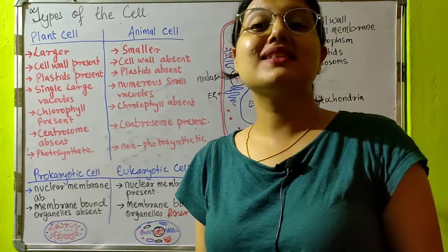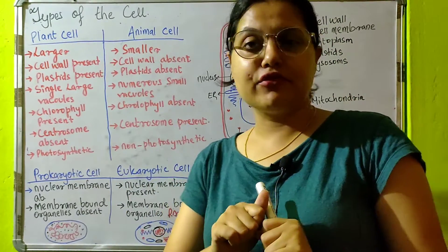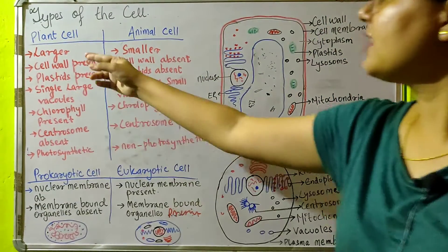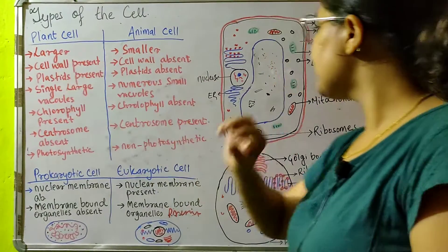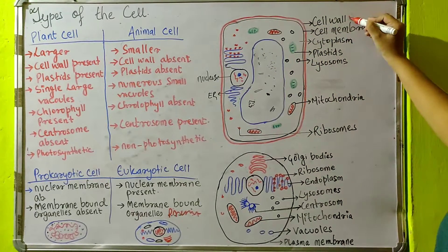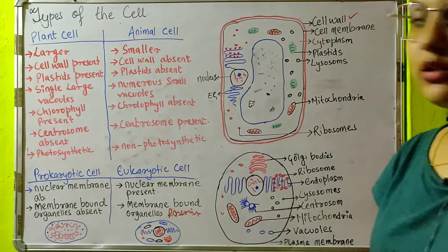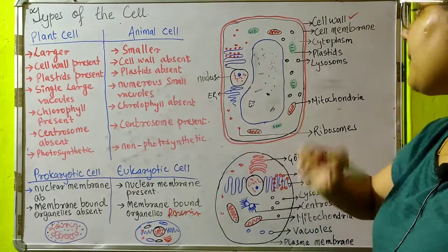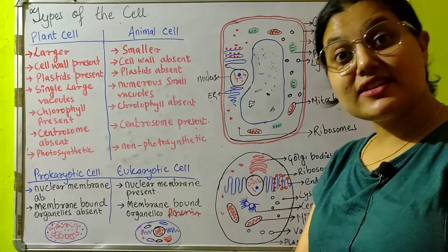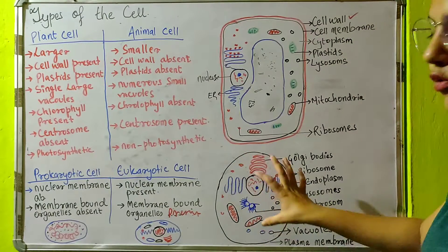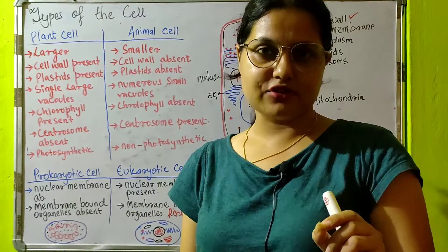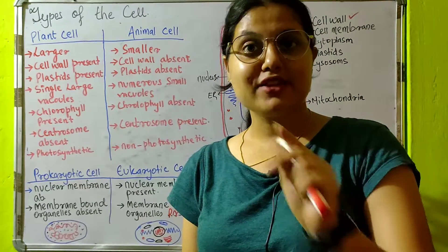Now for the comparison between plant cell and animal cell: first, the plant cell is larger in size and the animal cell is smaller in size. Second, cell wall is present in plant cell — you see the red color margin I have drawn, that is the cell wall — but it is not present in animal cell. Third, plastids are present in plant cell. You see this green color organelle — that is plastids. There are no green plastids in animal cell.